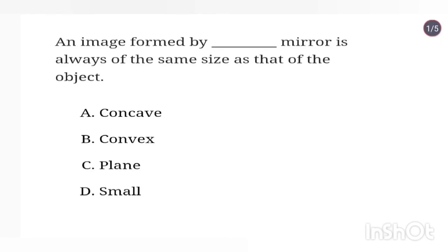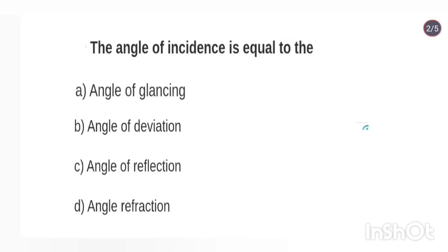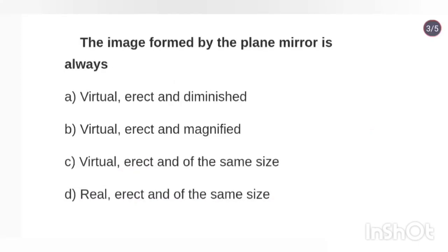An image formed by plane mirror is always of the same size as that of the object. The angle of incidence is equal to the angle of reflection. The image formed by plane mirror is always virtual, erect, and of the same size.